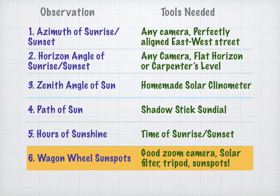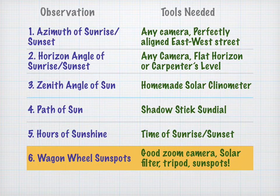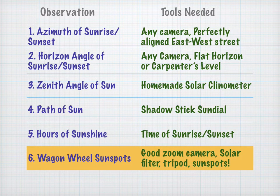Lastly, there's the wagon wheel sunspots. If there are sunspots visible on the Sun, you can record the change in angle. You'll need a good zoom camera, a solar filter, a tripod — and again, this is not possible to do unless there are good sunspots on the Sun.